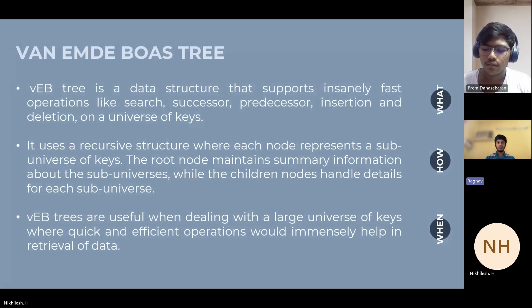Each node has a summary of the sub-universe or sub-array. The root of the tree basically contains the summary information of the sub-arrays and the sub-universes.